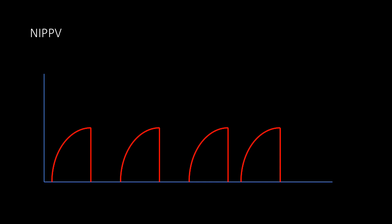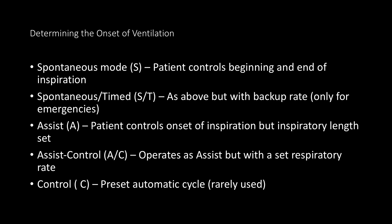Looking at the different ways of determining the onset of ventilation, there are a number of modes available. A spontaneous mode, abbreviated S: the patient controls the beginning and end of inspiration. The spontaneous timed mode, ST, is probably the most commonly used mode on the Philips Respironics device — this is as above but with a backup rate that only kicks in in emergencies, essentially when the patient becomes apneic. The assist mode, A: the patient controls the onset of inspiration, but the inspiratory length is set. Assist control mode, AC: operates as the assist mode but with a set respiratory rate. The control mode, C: a preset automatic cycle, which is rarely used.